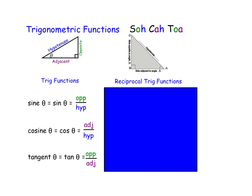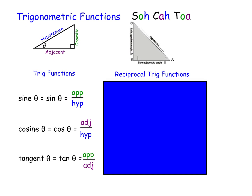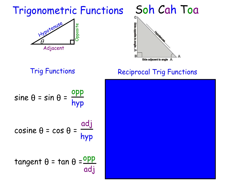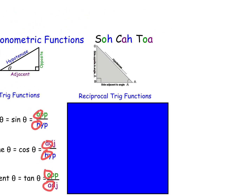Now let's go to slide 3. This is just reminding you that sine, cosine, and tangent are SOH-CAH-TOA. S-O-H-C-A-H-T-O-A. But what does it say here? Reciprocal trig functions in the blue box. What are those? What's a reciprocal? A reciprocal is where you flip something over. If I had 3 over 2, the reciprocal is 2 over 3.